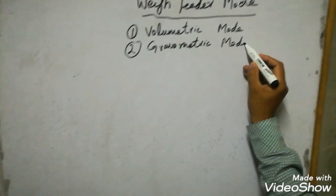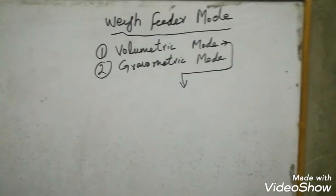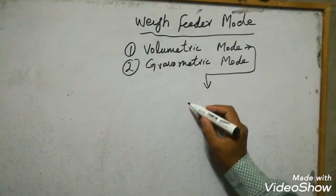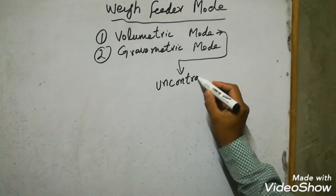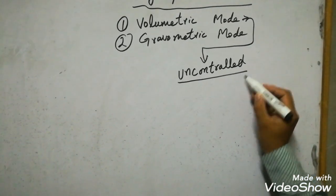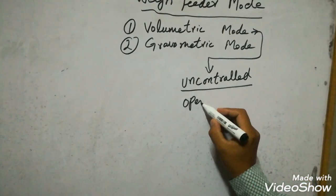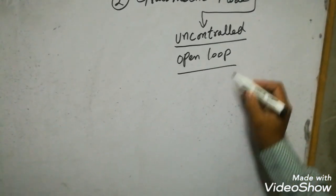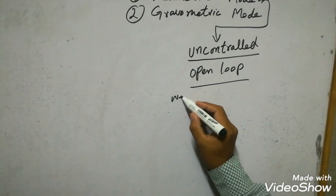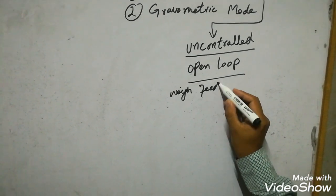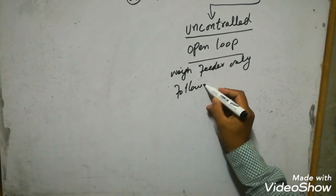First of all, we will see volumetric mode. Volumetric mode is also called uncontrolled mode, as it is not controlling the material as per our requirement. It is also called open loop control. So volumetric mode is uncontrolled mode, or it is an open loop control. The wave feeder only follows the set point in percentage.